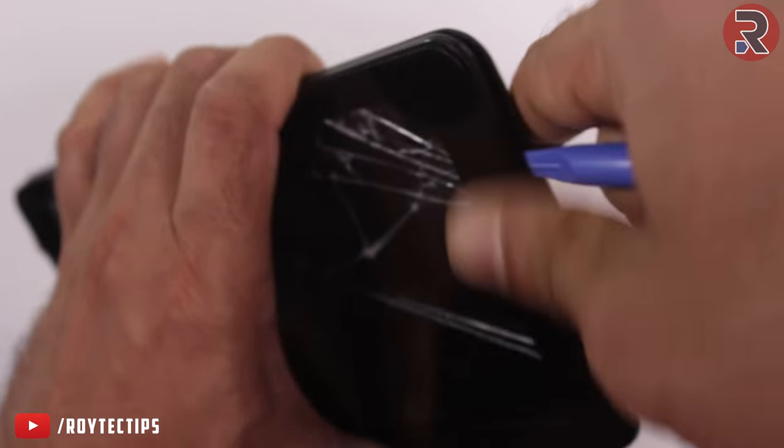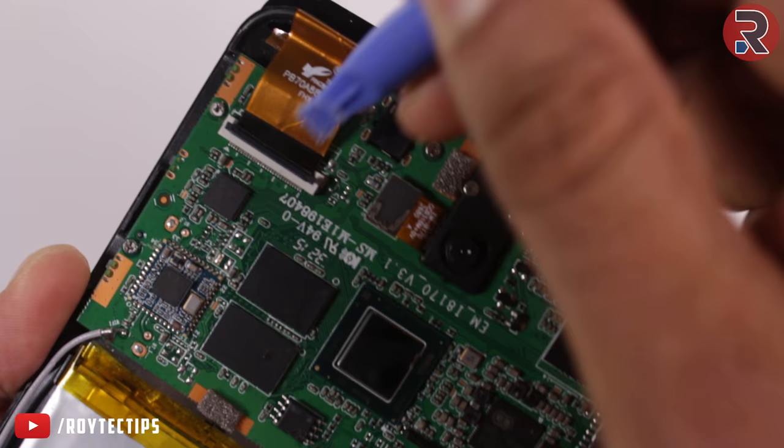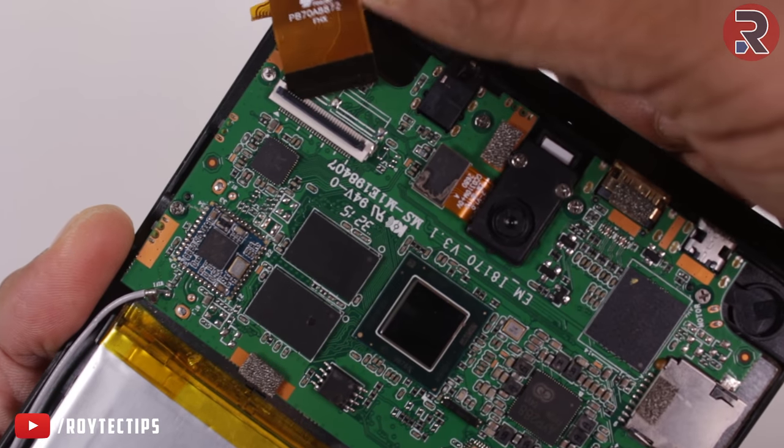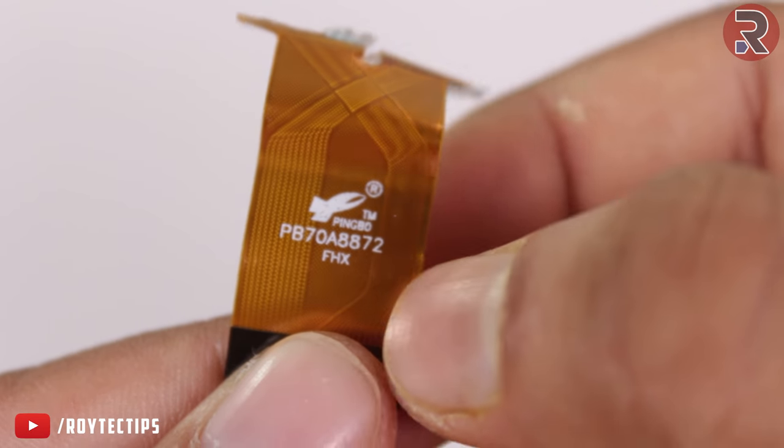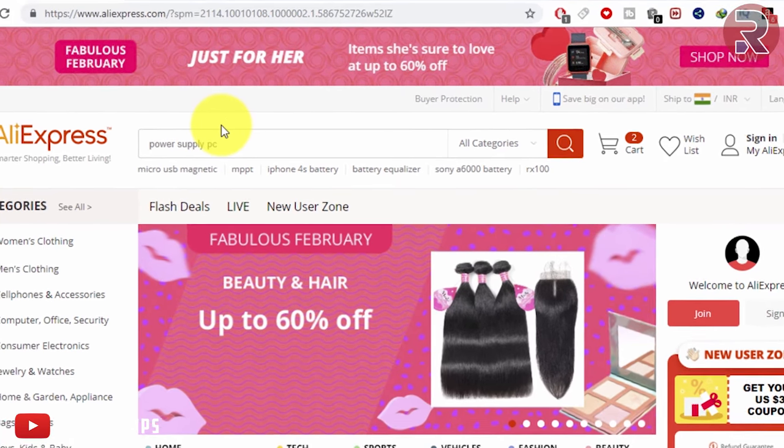First thing we need to do is open the tablet and figure out the model number of the broken parts. Here we have the model number of the broken touch screen: PB70 A8872.